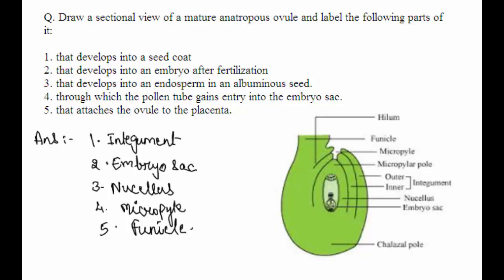What is an anatropous ovule? It is a completely inverted ovule turned back 180 degrees on its stalk. So you need to draw this figure where it is inverted completely.